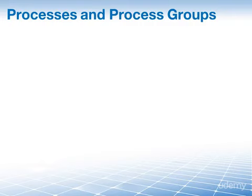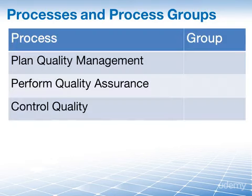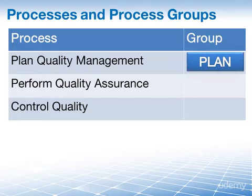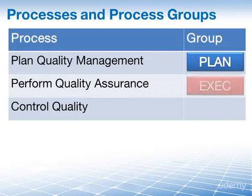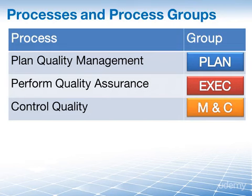On a high level, Perform Quality Assurance aims to improve development and test processes so that defects do not arise when the product is being developed, while Control Quality is here to identify defects after a product is developed and before it is released. These map to process groups as follows: Plan Quality Management falls in the planning process group. Perform Quality Assurance — the word 'perform' means executing something — falls in the executing process group. And Control Quality falls into monitoring and controlling.